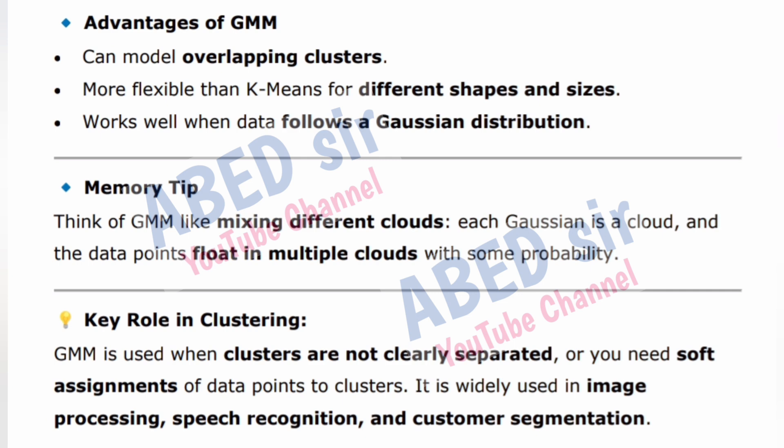Key role in clustering: GMM is used when clusters are not clearly separated or you need soft assignments of data points to clusters. It is widely used in image processing, speech recognition, and customer segmentation.